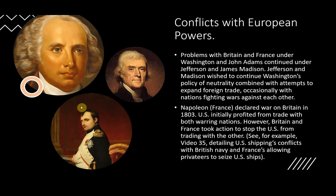Conflicts with European powers. There were problems with Britain and France under Washington and John Adams, and those problems continued under Jefferson and James Madison. Jefferson and Madison wished to continue Washington's policy of neutrality, combined with attempts to expand foreign trade, occasionally with nations fighting wars against each other. The idea is the U.S., like any country, is basically going to trade with anybody — and occasionally you're going to end up trading with people on both sides of a war.